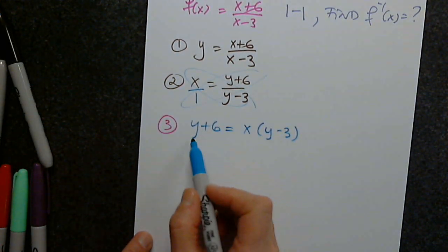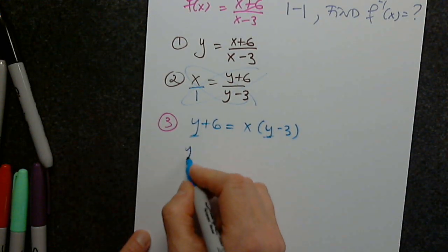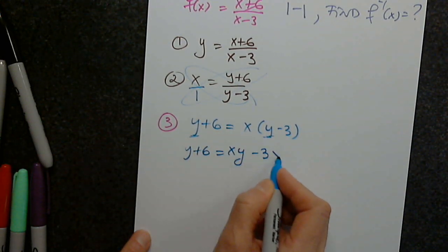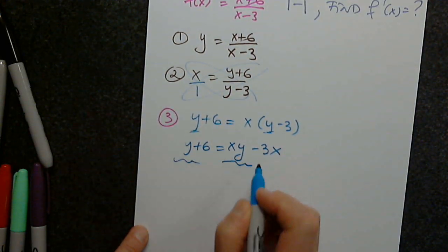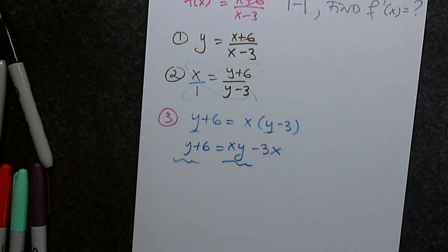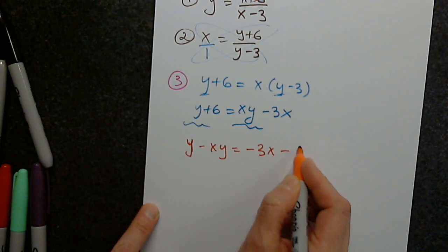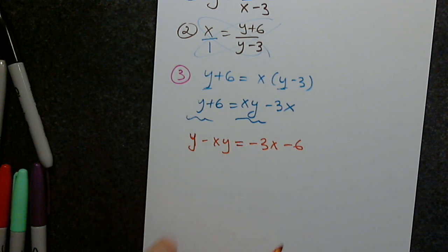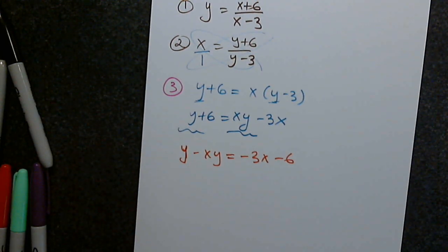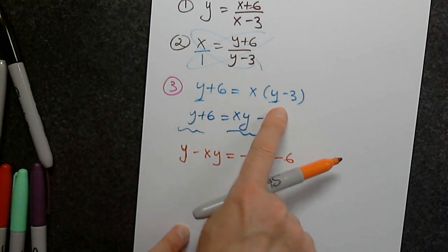We are solving for y, so we have to distribute: y + 6 = xy - 3x. There are two terms with y. Since I'm solving for y, those terms have to be on one side: y - xy = -3x - 6. We did it by cross-multiplication: this times this equals this times this, and then we distribute.